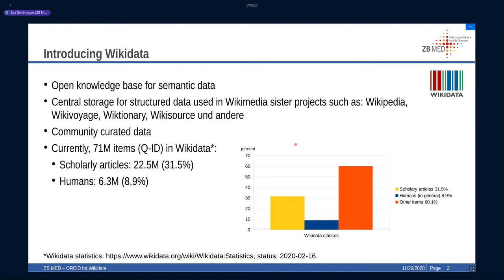Since the data is continually created, we are also allowed to contribute to the data, which we are going to do in this project. The last statistics of the current shares in Wikidata, unfortunately from the beginning of 2020, show that almost a third part — the yellow one — of all entities or items in Wikidata are scholarly articles, and only about nine percent are humans. Those nine percent include not only scholars and authors, but also actors, politicians, long-dead kings from the Middle Ages, and famous gangsters.